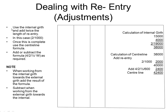We spoke about the re-entry briefly, so the re-entry calculation is done in the same manner. We would do our normal girth calculation, add the re-entries, and then utilise our four by two by a half times w. Use the internal girth and add twice the length of the re-entry. There may be multiple re-entries, so we need to take all of them into account. In this particular case, there was only one, and it was twice times 1,000. Once this is complete, use the centre line formula — add or subtract as required.